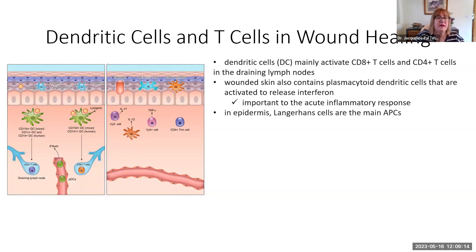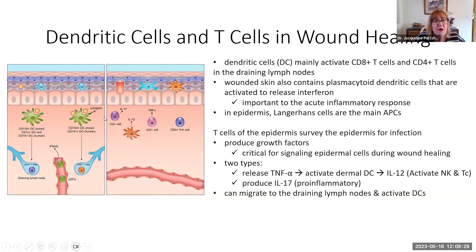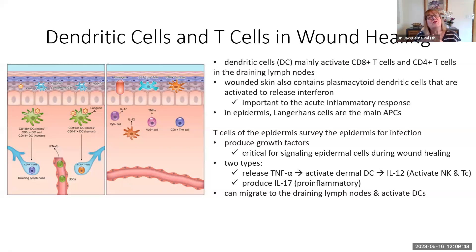In the epidermis, Langerhans cells are the main antigen-presenting cells, providing T cell immunity. When T cells are in the epidermis, they're releasing growth factors - one type being pro-inflammatory, and another type activating other T cells and inflammatory cells. They activate natural killer cells to help get rid of any pathogens in the area, and activate cytotoxic T cells as well. Both natural killer cells and cytotoxic T cells act via perforin and granzymes.